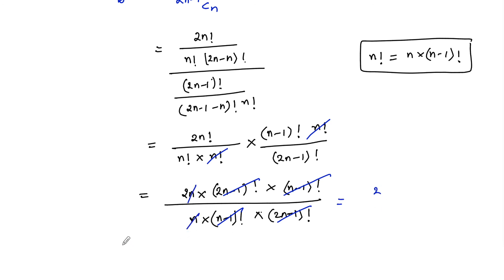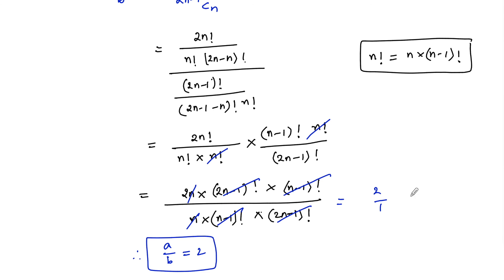So a upon b is equal to 2 by 1. Therefore, a upon b is equal to 2 is the answer.